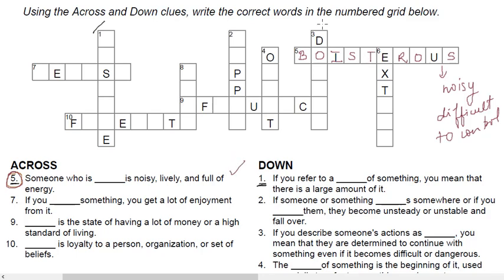So the fifth one is done. So from this, you get to know that the third word which goes down can be used now to find the meaning of the third word. It says if you describe someone's actions as dash, you mean that they are determined to continue with something even if it becomes difficult or dangerous. So when someone is determined to continue, even if that thing is difficult or dangerous, then how that person is. Now, you know that in cricket matches, we use the word dogged. So when someone is dogged, so the word is D-O-G-G-E-D.